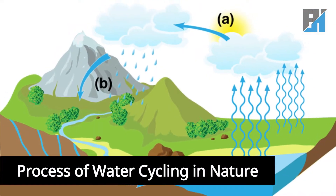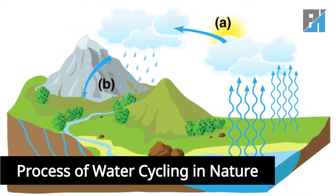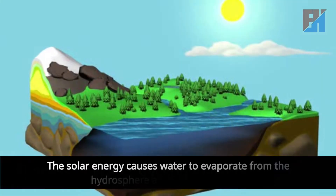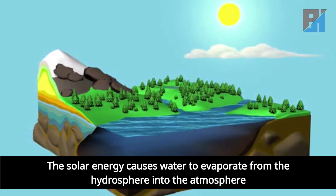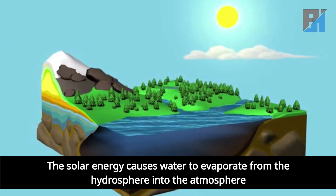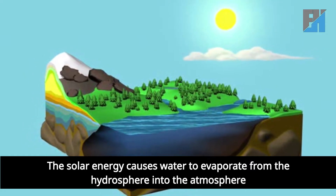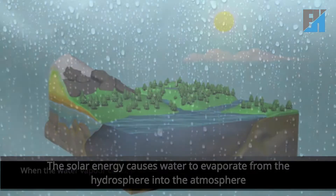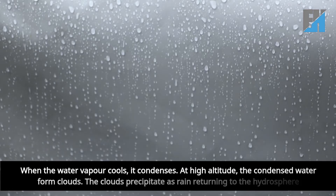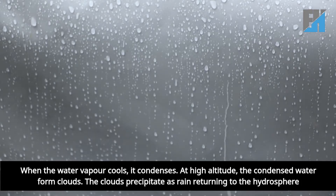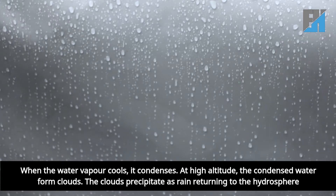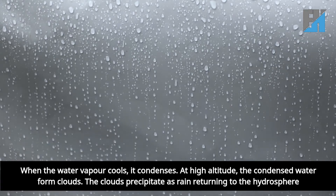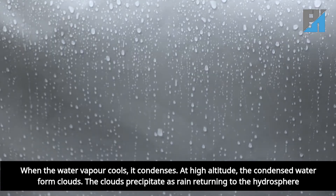Process of water cycling in nature. Solar energy causes water to evaporate from the hydrosphere into the atmosphere. When the water vapor cools, it condenses. At high altitude, the condensed water forms clouds. The clouds then precipitate as rain, returning water to the hydrosphere.